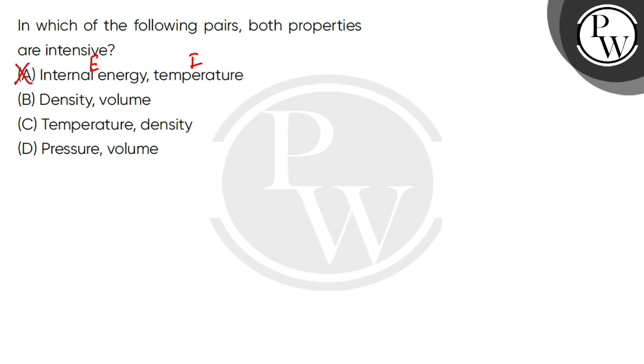The second option is density and volume. Density is an intensive property and volume is an extensive property, so this option is also incorrect.